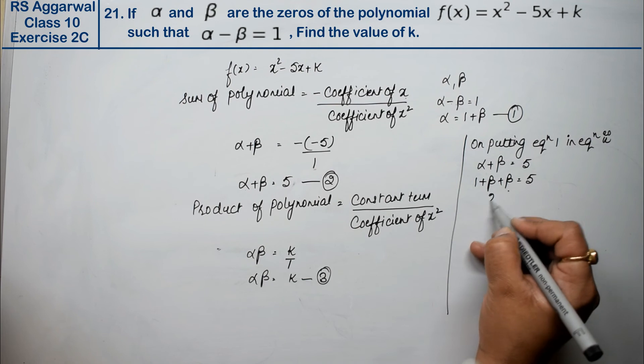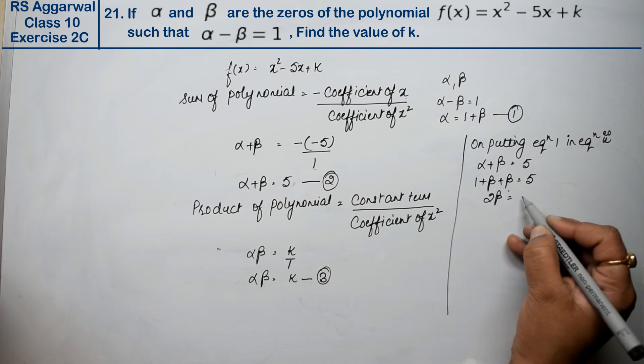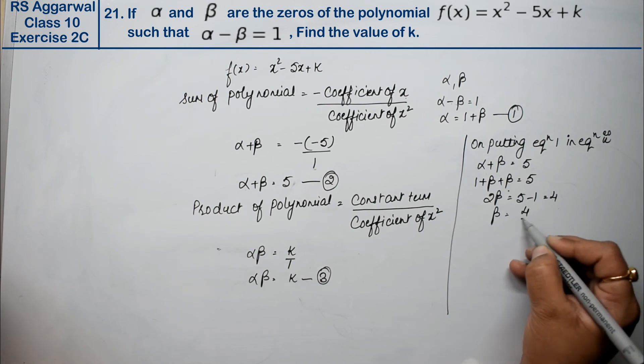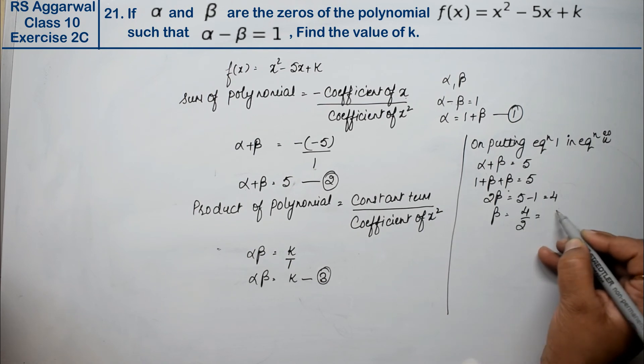So we have 2β = 5 - 1, that is 4. So beta value is 4 upon 2, which is 2.